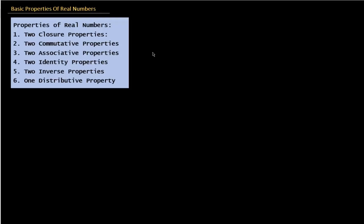In this lesson, we are going to be looking at some of the basic properties of real numbers. So these properties total 11 properties: two closure properties, one is for addition, and one is for multiplication.